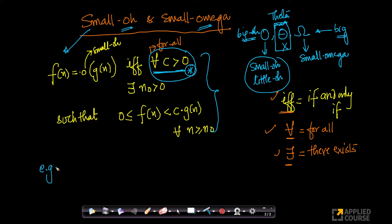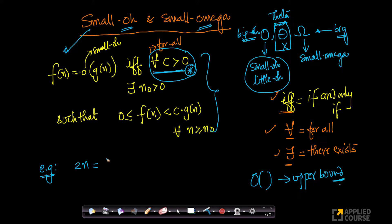For example, suppose I have 2n. We know that 2n is big-O of n, since big-O gives us an upper bound. But 2n is not small-O of n, because the condition won't hold for all c greater than 0.